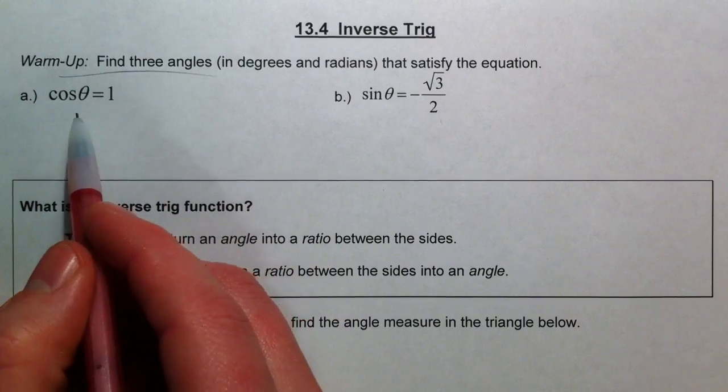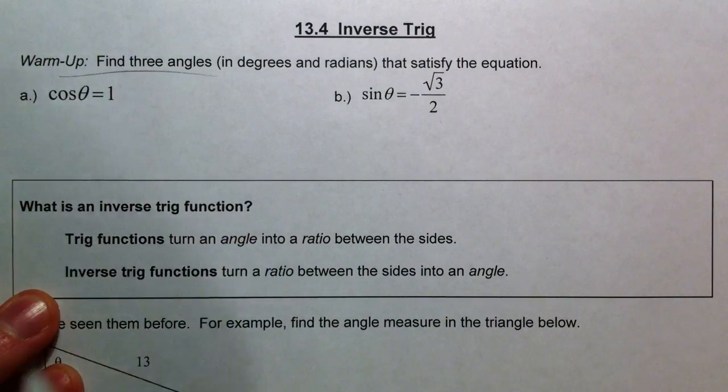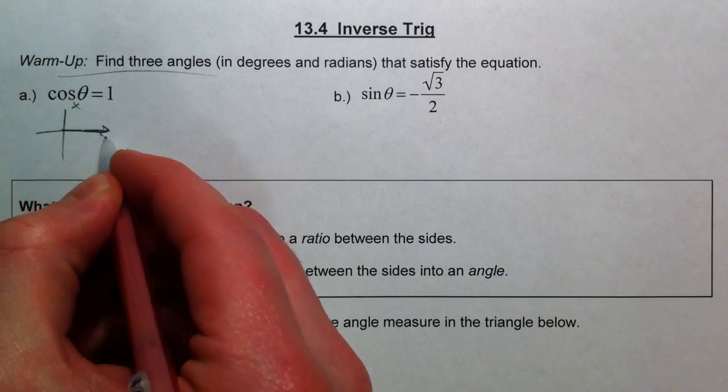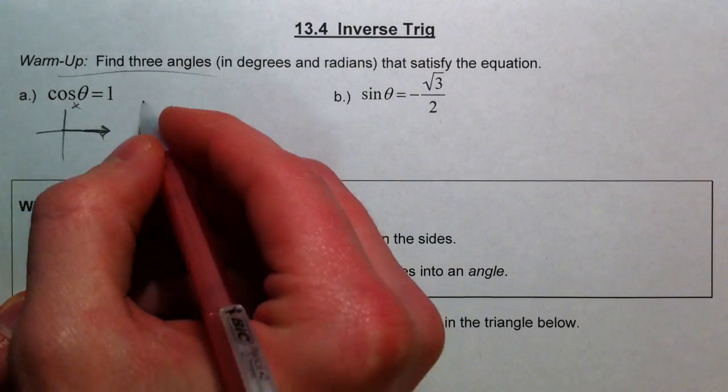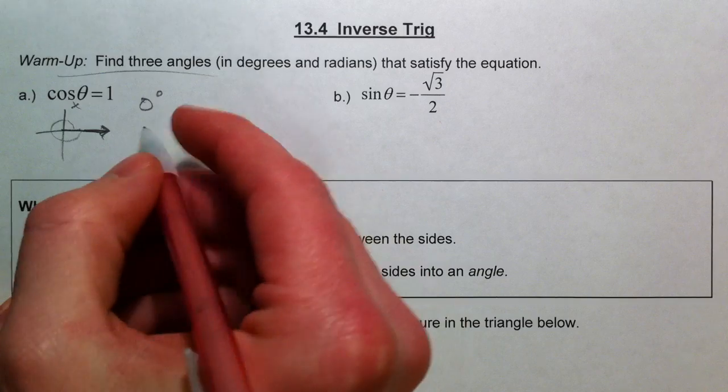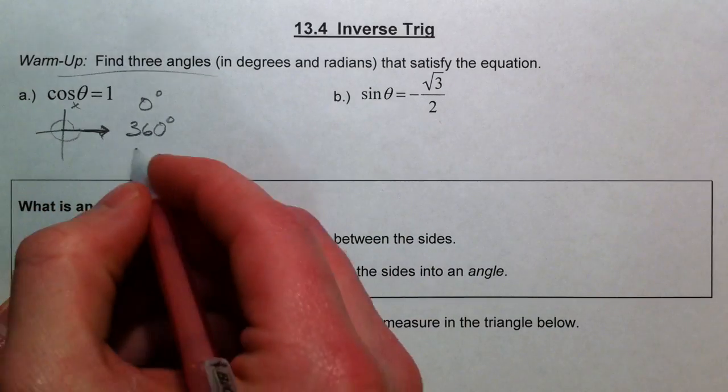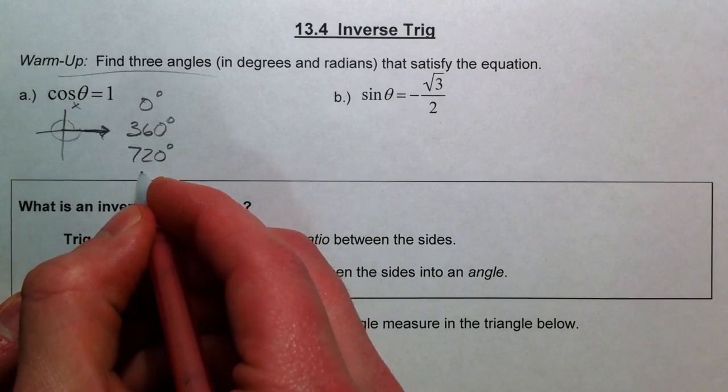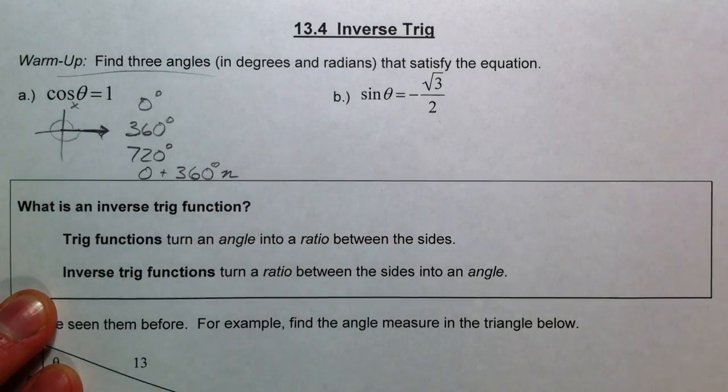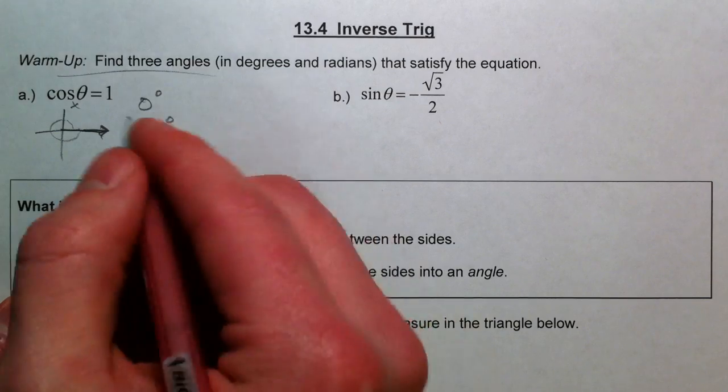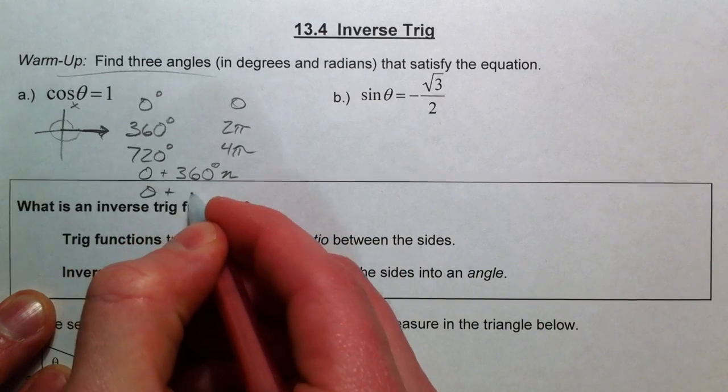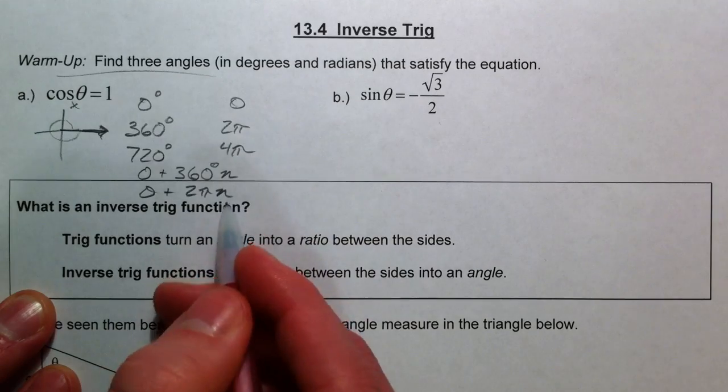To warm up, I want us to think about cosine of some angle equaling one. If you remember back to our unit circle, imagine where the x value is equal to one. One such would be zero degrees, or if you went all the way around, 360, or 720. You could keep going, because really there's zero plus 360 degrees times n, infinite answers. In radians, it would be zero, two pi, four pi - zero plus two pi n, where n is an integer.